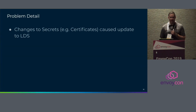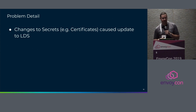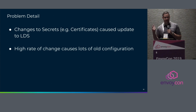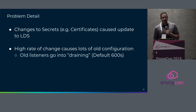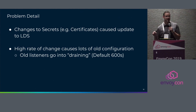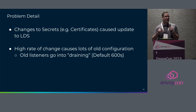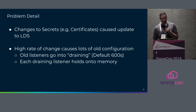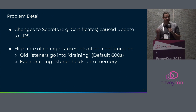Looking at the problem, what we figured out was that the key was TLS connections. When we modified secrets in Kubernetes — SDS basically — we caused an update to our LDS, our listeners, in Envoy. At a high rate of change, we caused a lot of listeners to get created and ended up with lots of old configurations sitting around. When you create lots of different listeners in Envoy, you end up in a draining mode, and all your old listeners sit around until they get drained out, which by default is 600 seconds. So if I create 5,000 objects, I ended up with 5,000 different listeners running, all consuming memory and holding onto it for 600 seconds. Each listener in draining mode holds onto memory. On a small scale this worked fine — traffic still routed fine — it just used up a ton of memory.